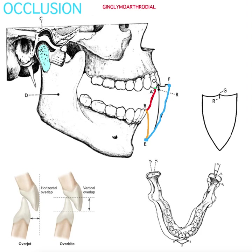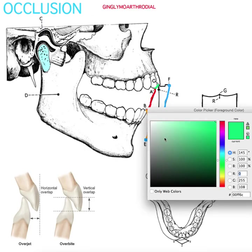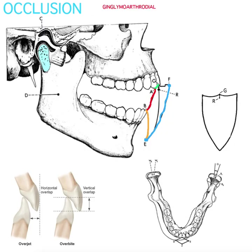That small slide is called slide in centric, because we're still technically in centric relation with the joint. The end point of that slide used to be called centric occlusion — now it's called maximum intercuspation.